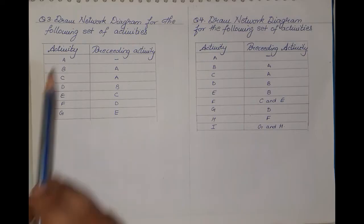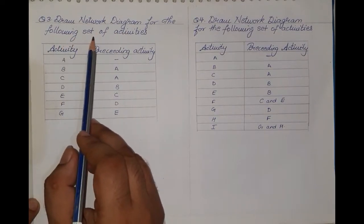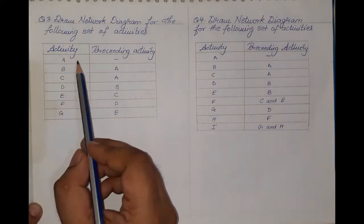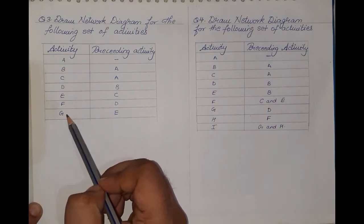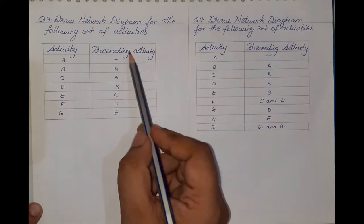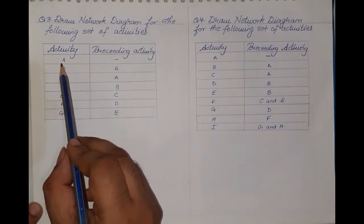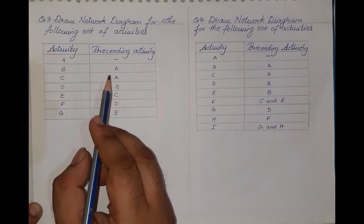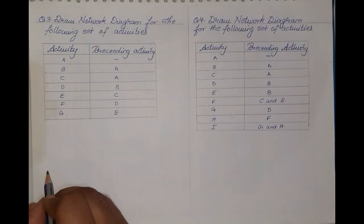Question number three: draw a network diagram for the following set of activities. The activities given are A, B, C, D, E, F, and G, along with their preceding activities. For activity A there is no preceding activity, so that is the activity from which we will start the sum.